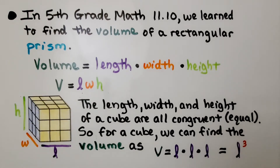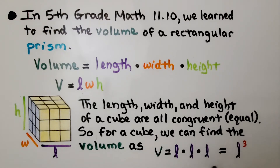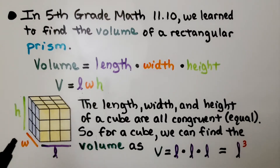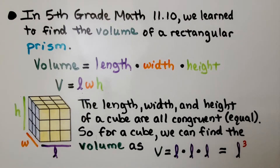The length, width, and height of a cube are all congruent — they're all equal. So for a cube, we can find the volume as V equals L cubed, L to the third power. Because if it's a cube, its length, width, and height are all the same, so we can do length times length times length — that is L raised to the third power, or L cubed.